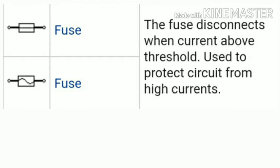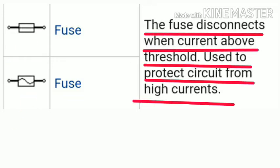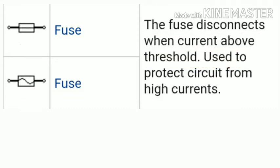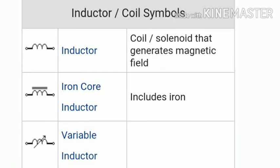The next symbol is the fuse. The fuse is a protective device — it disconnects when overflow or threshold current flows through the circuit, protecting the circuit from high current. The fuse is used as a protective device for domestic purposes and is a very important electrical engineering symbol.